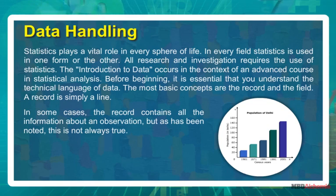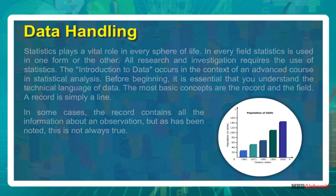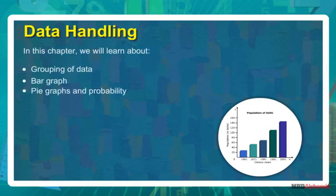The most basic concepts are the record and the field. A record is simply a line. In some cases, the record contains all the information about an observation, but as has been noted, this is not always true. In this chapter we will learn about grouping of data, bar graph, pie graphs, and probability.